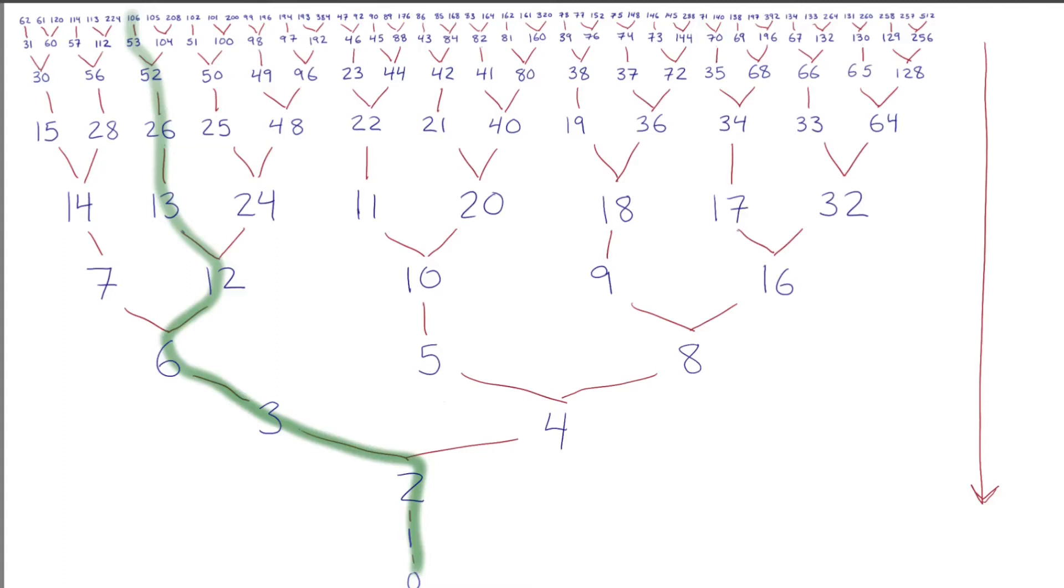Doubling and subtracting one both make you smaller, and one or the other is always dictated. So the process can't go forever, and it can't stop unless it hits zero.